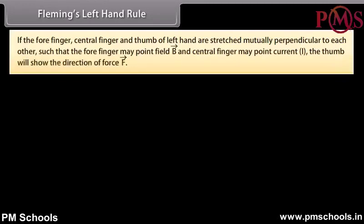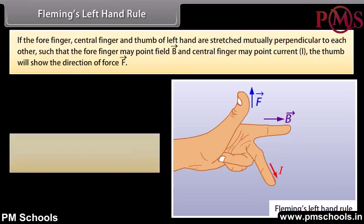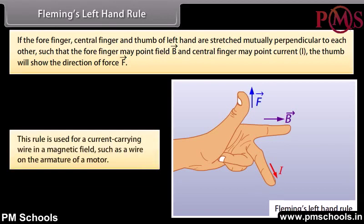Fleming's left hand rule: if the forefinger, central finger, and thumb of the left hand are stretched mutually perpendicular to each other such that the forefinger points in the direction of the field and the central finger points in the direction of current, then the thumb will show the direction of force. This rule is used for a current carrying wire in a magnetic field, such as a wire on the armature of a motor.